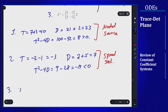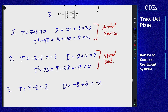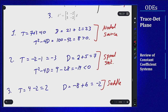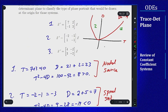For number 3, we have a trace of 4 minus 2, which is positive 2, and a determinant of negative 8 plus 6, or negative 2. Because d is negative, t squared minus 4d is always going to be positive — it's going to be something squared plus a positive number — so because d is negative, this is a saddle. Number 3 with t of 2 and d of negative 2 sits somewhere down here. So based on this graph: 1 is a nodal source, 2 is a spiral sink, and 3 is a saddle.